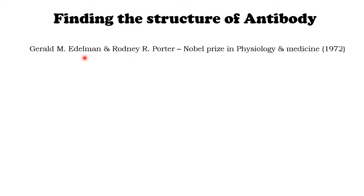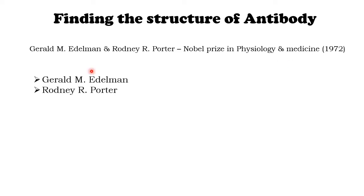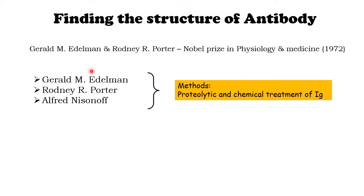In 1972, Gerald M. Edelman and Rodney R. Potter received the Nobel Prize in Physiology and Medicine for the discovery of antibody structure. The three major scientists behind this discovery are Gerald M. Edelman, Rodney R. Potter, and Alfred Nissenoff. They did their experiments independently, but later all their findings were combined. Their experiments fall into two categories: proteolytic and chemical treatment of immunoglobulin.